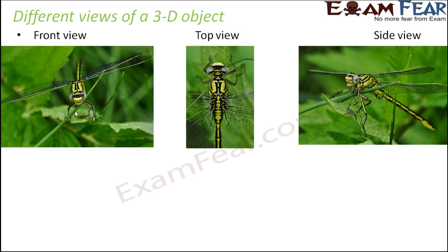The three views are very different from each other. Why is that? Any three-dimensional object has three different parameters: length, breadth, and height. From whichever side we look at that object, we only see that side. For example, from the front view of this insect, we cannot see how the wings look from the top — they just appear as a straight line. But from the top view, you get to see all the minute details of the wings.